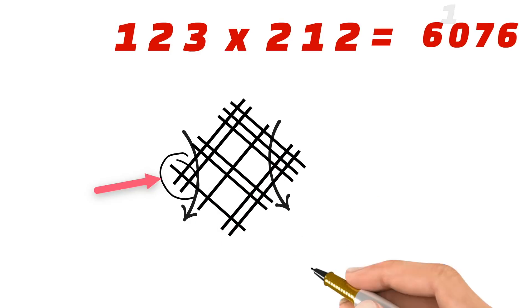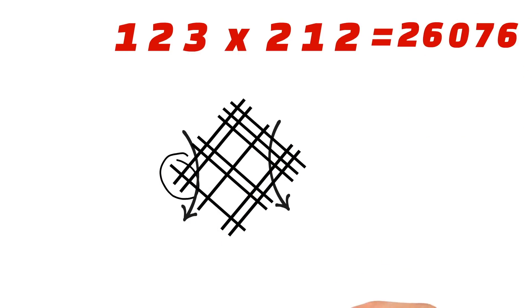The last group has two intersection points. So the answer for 123 × 212 is 26,076.